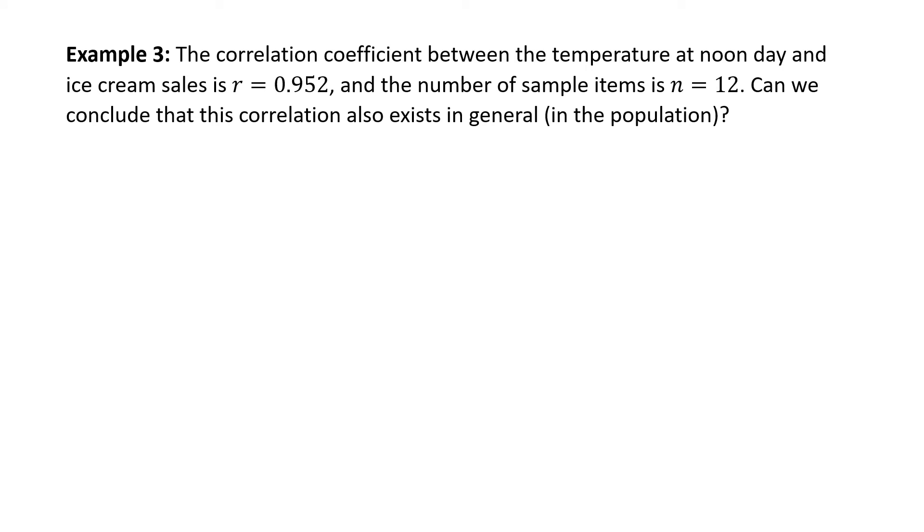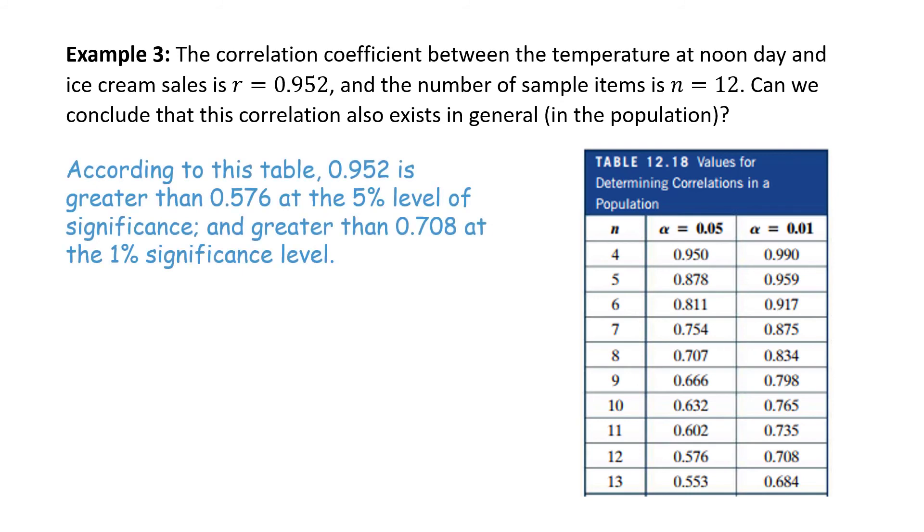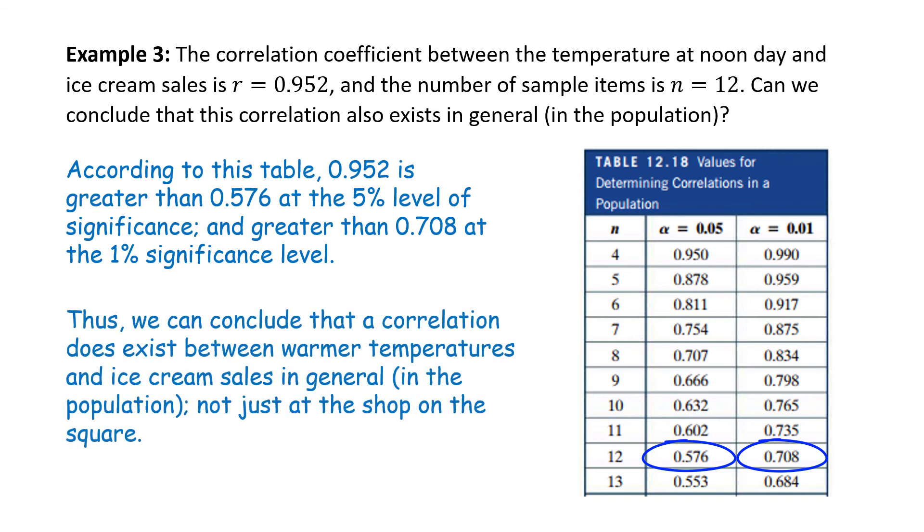Example: the correlation coefficient between the temperature at noonday and ice cream sales is R equals 0.952, and the number of sample items is N equals 12. Can we conclude that this correlation also exists in general or among the whole population? Using this table, according to this table, 0.952 is greater than 0.576 at the 5% level of significance and greater than 0.708 at the 1% significance level. Thus, we can conclude that a correlation does exist between warmer temperatures and ice cream sales in general, that is in the population and not just at the shop on the square.